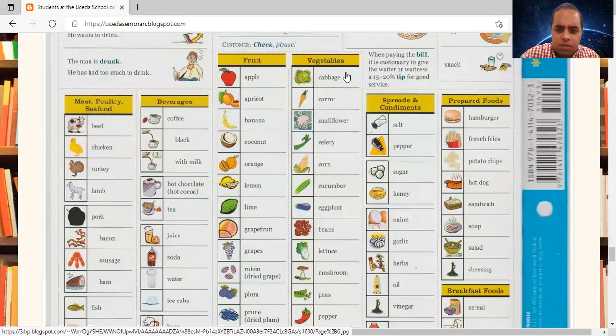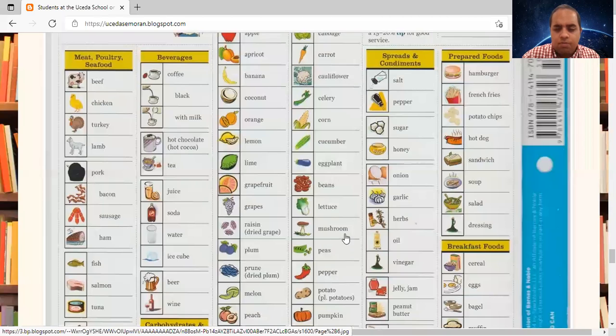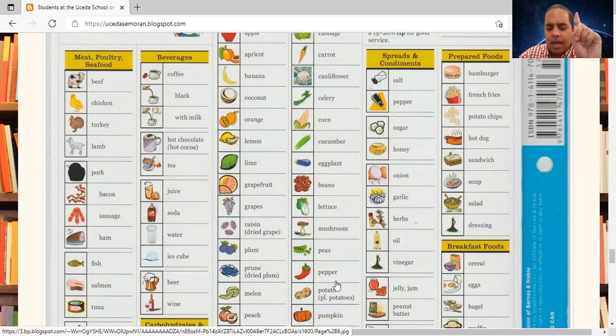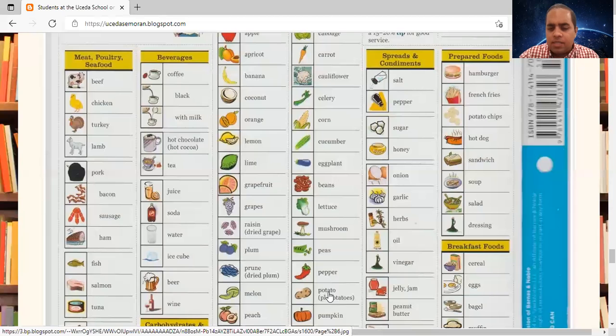Vegetables. Cabbage. Carrot. Cauliflower. Celery. Corn. Cucumber. Eggplant. Beans. Lettuce. Mushroom. Peas. Pepper. Potato. Potatoes. I have one potato. I have two potatoes. Potato is singular. Potatoes is plural.